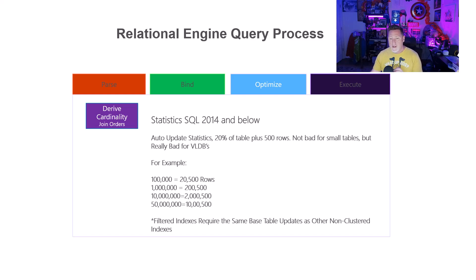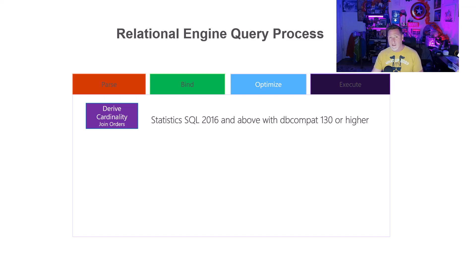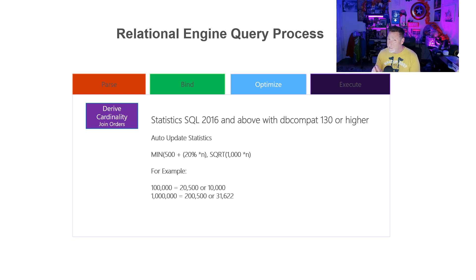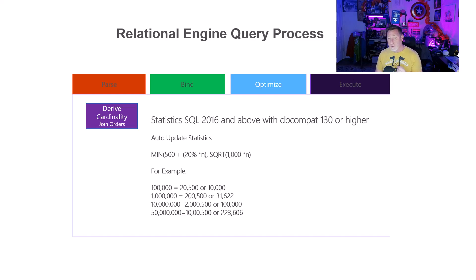Something to keep in mind: filtered indexes require the same base table update as non-clustered indexes, so filtering an index doesn't make it any easier. For SQL Server 2016 and above — and you have to be on DB compatibility 130 or higher with auto-update statistics on — the new algorithm is: the old 500 rows plus 20%, OR the square root of 1,000 times the number of rows in the table, whichever is less. So for 100,000 rows, it's down to 10,000. For a million rows, 31,622. For 10 million rows, down to 100,000. For 50 million rows, down to 223,606. That's a really big improvement.